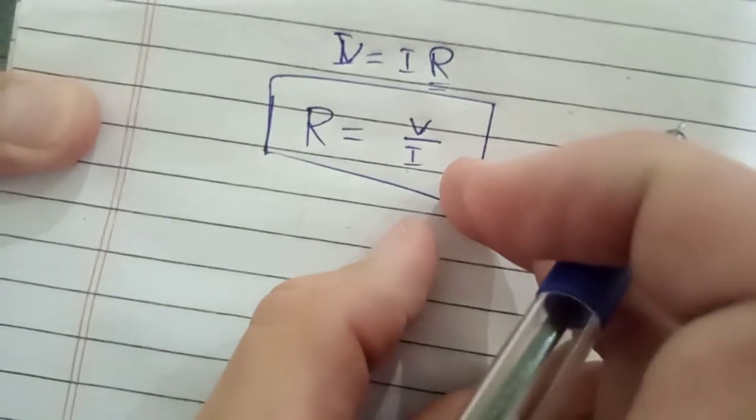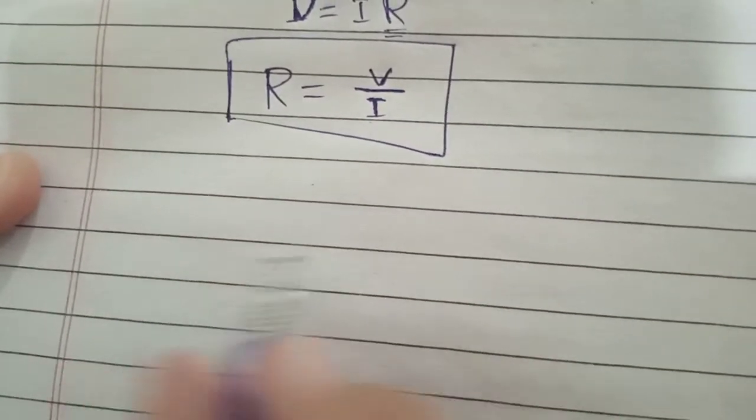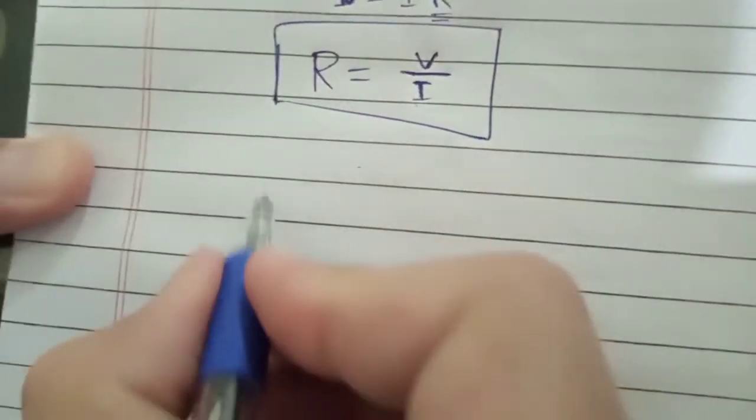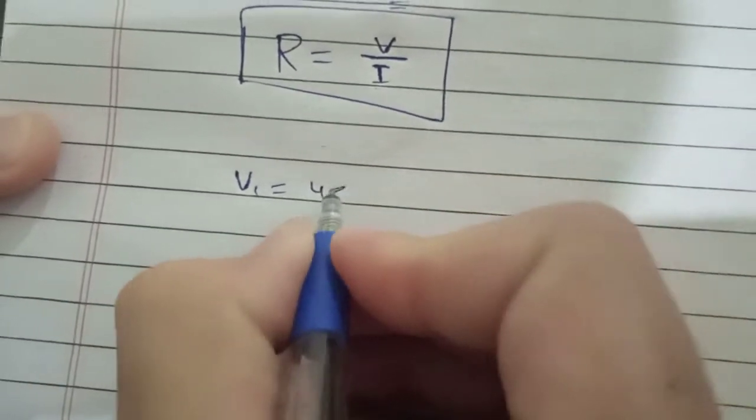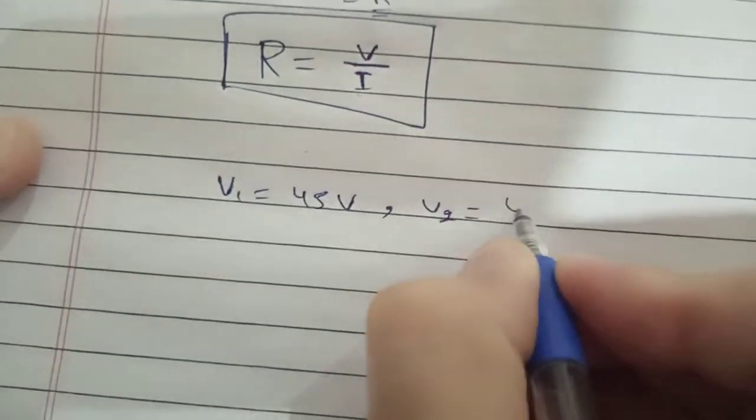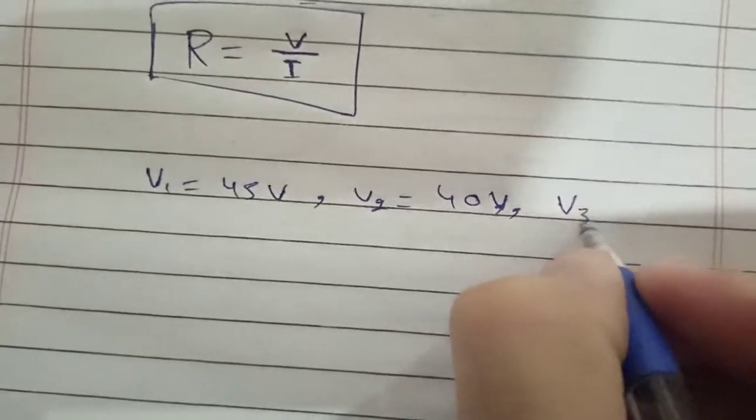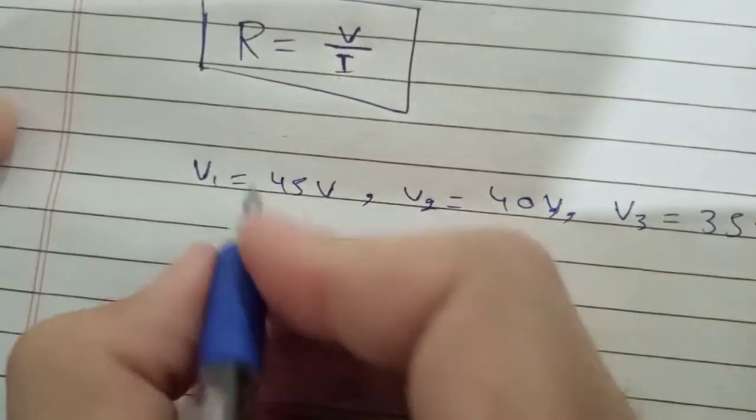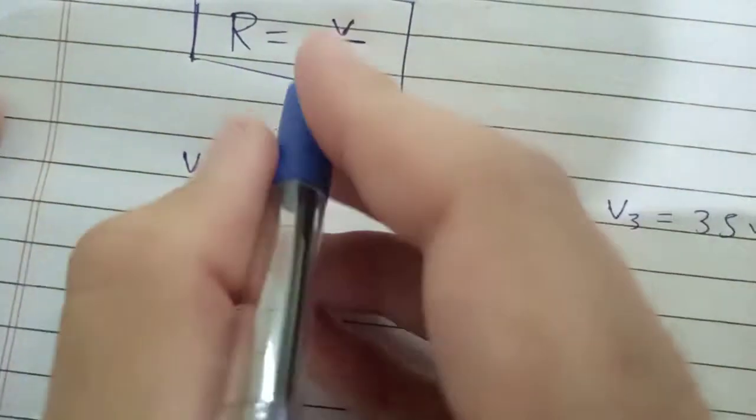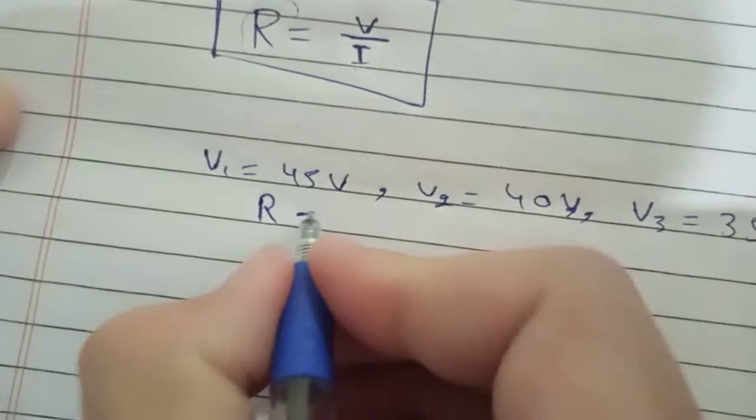Now let's verify how voltage and current are related linearly to one another. Let's choose random values for voltages: V1 is 45V, V2 is 40V, and V3 is 35V, keeping the value of resistance constant. The value of R will remain constant throughout the circuit at 5 ohms.